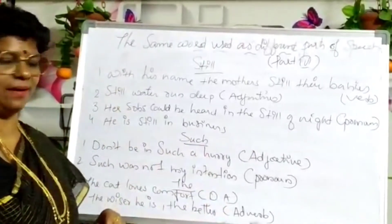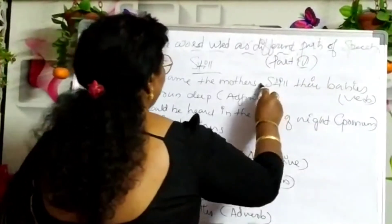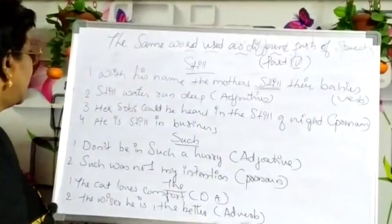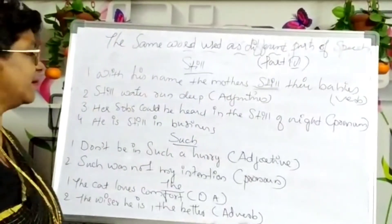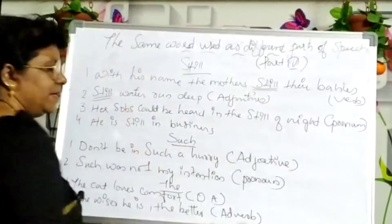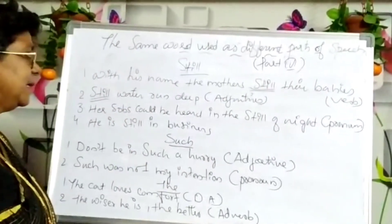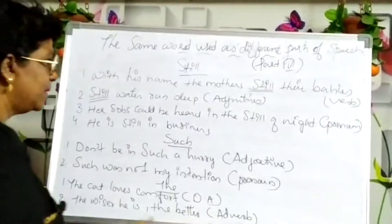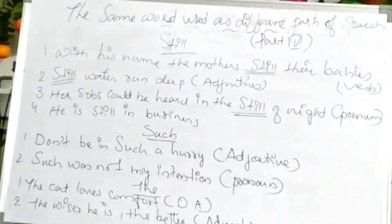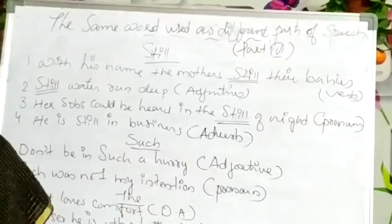Next word: 'still.' In 'With his name the mother stills their babies,' it functions as a verb. In 'Still water runs deep,' 'still' shows an adjective. In 'Her sobs could be heard in the still of night,' 'still' shows a noun. In 'He is still in business,' it shows an adverb.